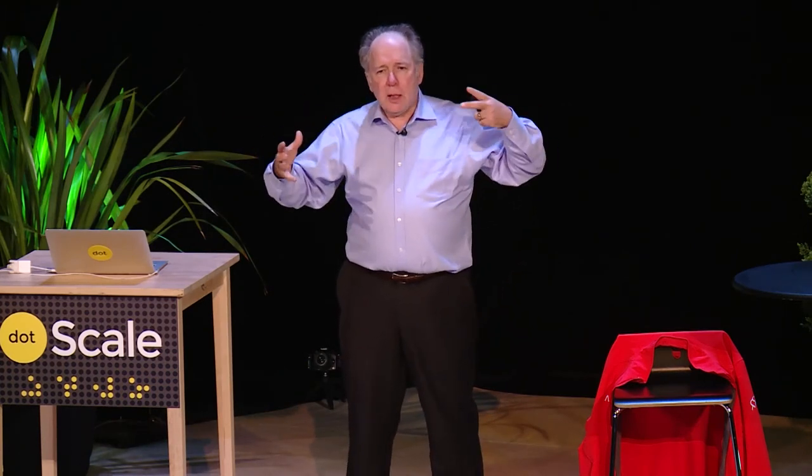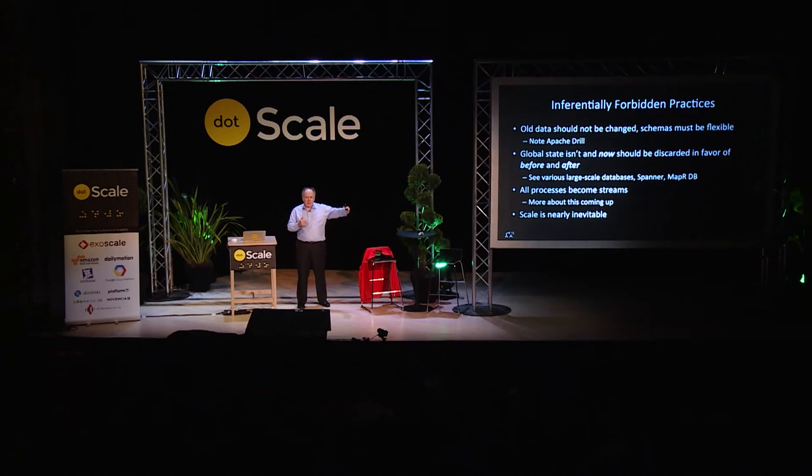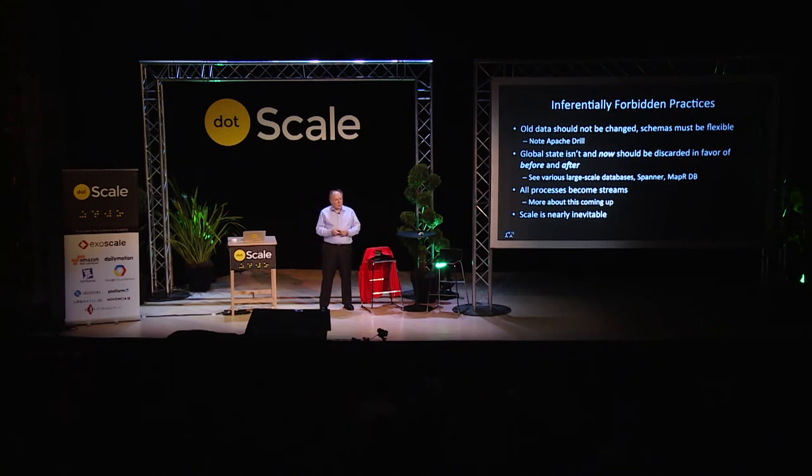Examples: old data should not be changed — we should have flexible schemas, able to query old data in an old format and new data in a new format, old data with old variables, new data with new types. Apache Drill does exactly this. Various large-scale databases have attempted to attack the global state problem by weakening the operations we can do. Spanner, for instance, gives up the idea that we necessarily have incremental steps and says instead: you cannot see this before a certain time, but you will see it after a certain time — allowing causal discussions about things.